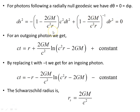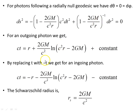From that, as shown in the ninth video in this series, for an outgoing photon we get a specific geodesic equation from solving the differential equation. And replacing t with minus t, we get the ingoing photon geodesic. The Schwarzschild radius is rs = 2GM/c².